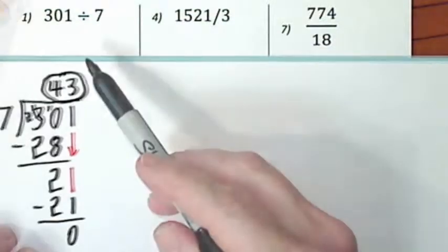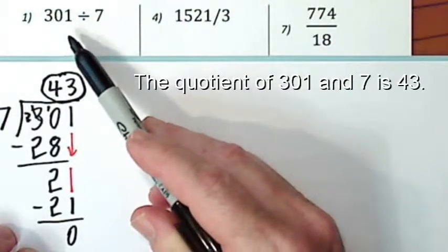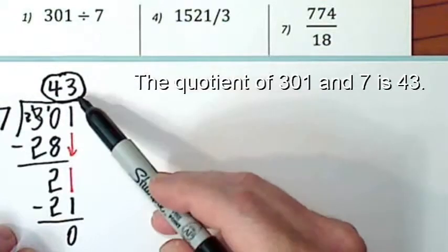I could also say the quotient of three hundred one and seven is forty-three.